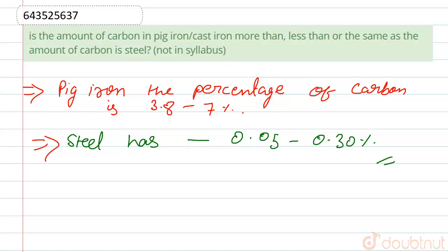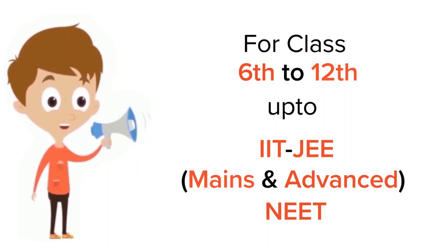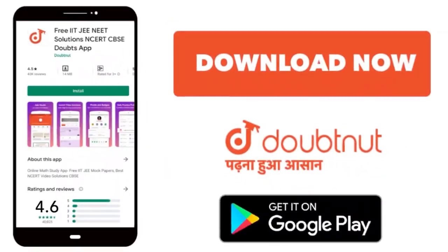For class 6 to 12, IIT-JEE and NEET level, trusted by more than 5 crore students. Download DoubtNet app today.